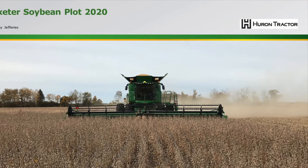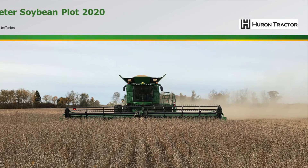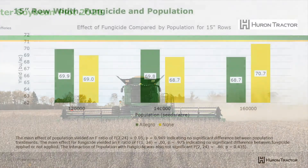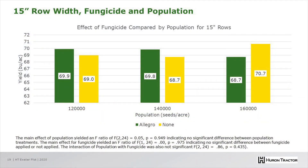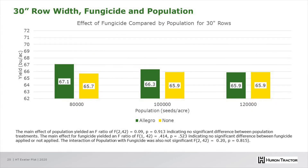Let's take a look at the effect of fungicide on these different row width and population treatments. This figure has yield on the y-axis, soybean seeded population along the x-axis, with green representing an Allegro application and yellow representing no Allegro. Looking at 15-inch row widths only, the fungicide did not have a statistically significant yield benefit across these various treatments.